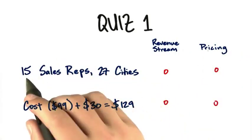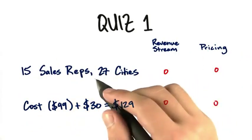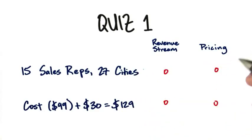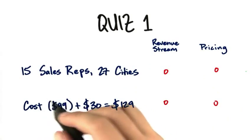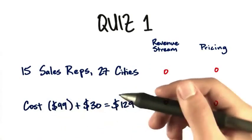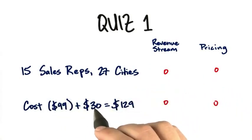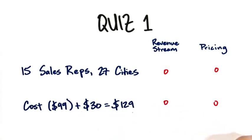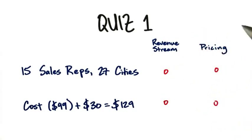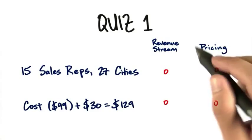Imagine I have 15 sales reps and they cover 27 cities in the United States and they're traveling all the time and they work for me. And by the way, my product's material cost is $99 and I decided I'm going to add a $30 gross margin on top of it, so I sell the product for $129. Think about this for a second and tell me: which part was the revenue stream and which part was the pricing tactic?